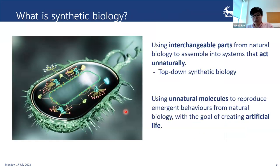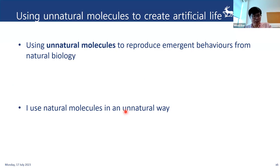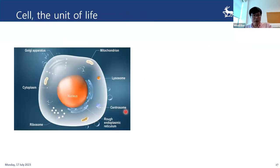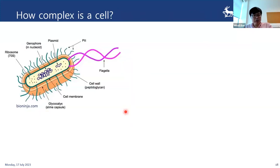Now I'll move on to bottom-up synthetic biology. People usually talk about using unnatural molecules to reproduce emergent behaviors, but I would say we can also use natural molecules like DNA and RNA in an unnatural way to create those behaviors. When we talk about emergent behavior, we are talking about recreating cell-like behavior and lots of cellular functions.